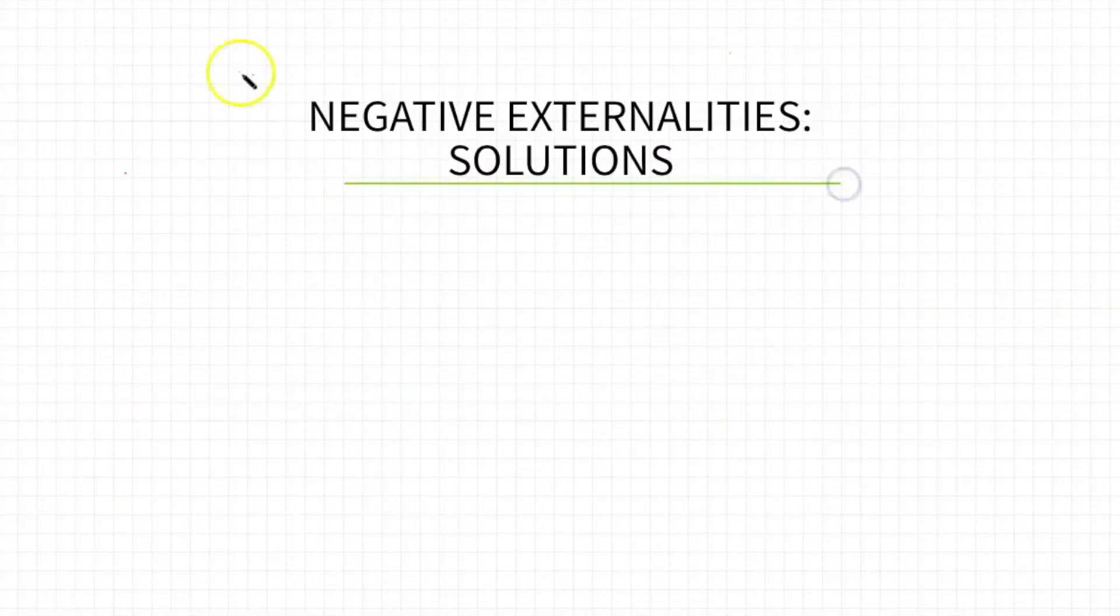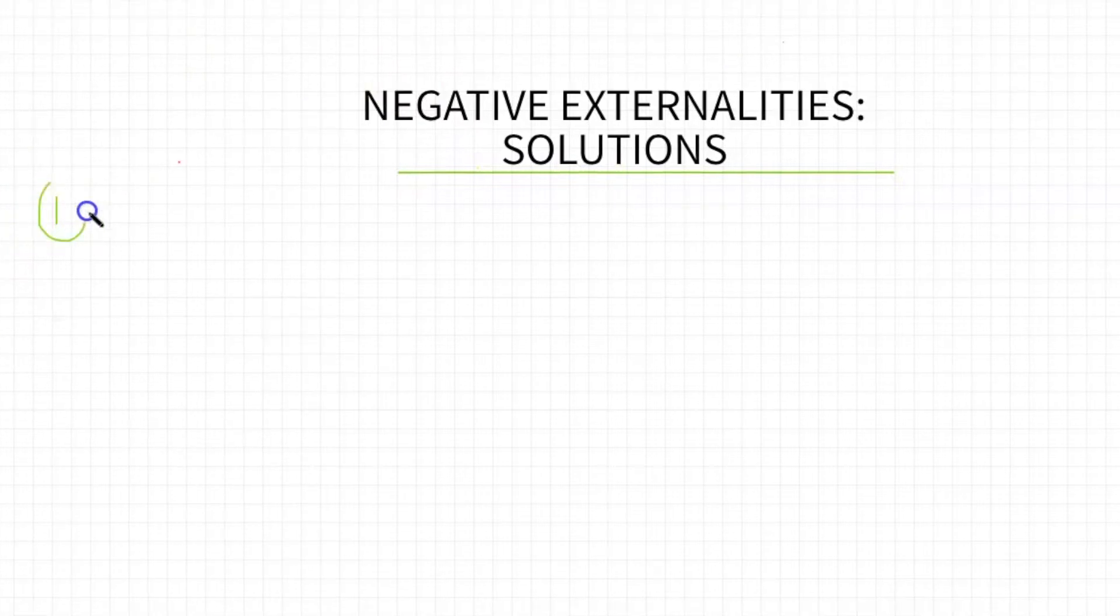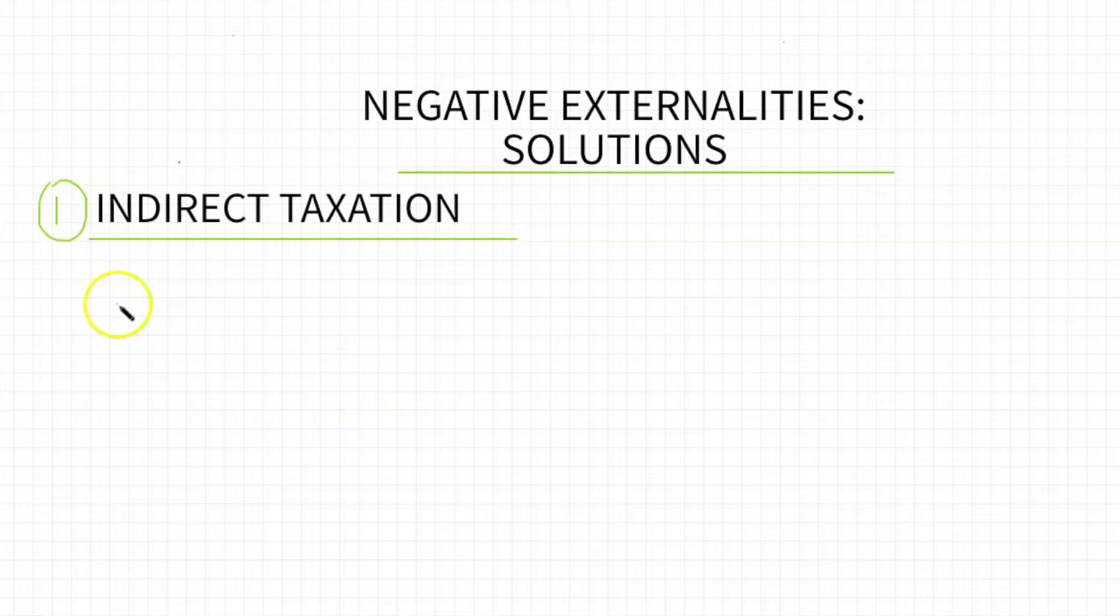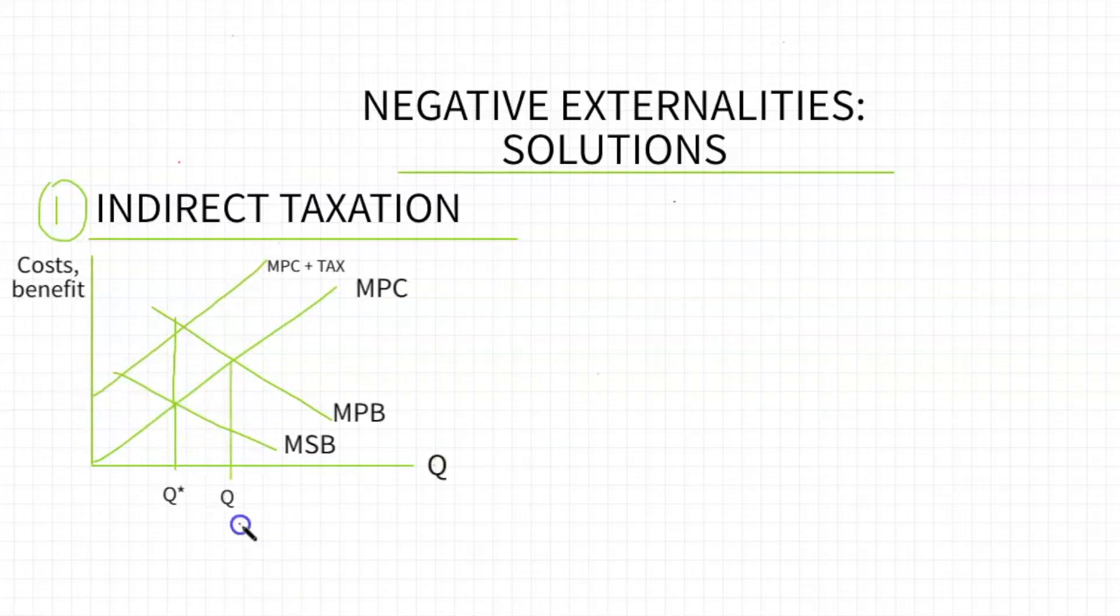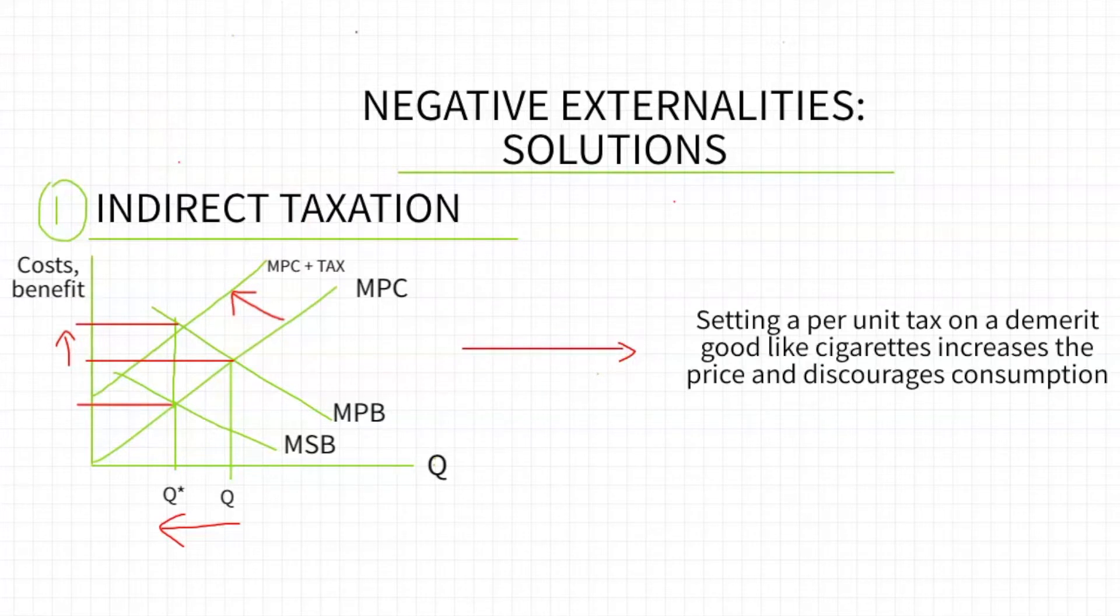Oftentimes for your paper one essays, you'll have to answer the ways in which we can solve negative externality problems. One of the most common ways that you solve negative externalities or the overconsumption of things like alcohol or cigarettes is that you tax them indirectly. You tax the per unit of the good or service. What this does is it increases cost of production for the producer and shifts the supply curve. The supply curve in this diagram is essentially MPC, marginal private costs, and so MPC shifts to MPC plus tax. This brings up the price of the relevant product like cigarettes and will ideally push people to consume less of this good.